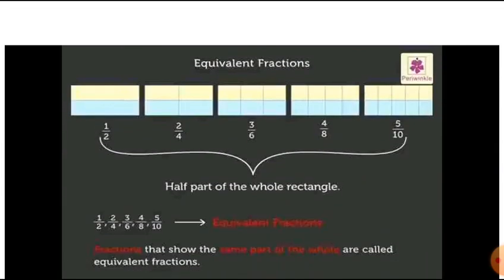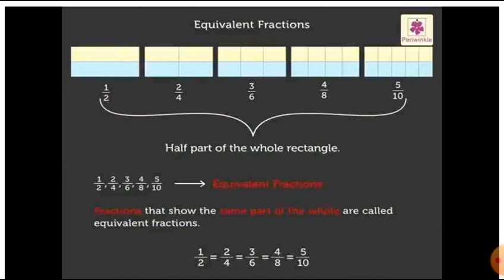Children, look at this given picture. Here you can see some rectangles. All the rectangles are having the same size. But the first rectangle is divided into two equal parts, and one part is shaded with blue colour, other part is shaded with yellow colour. So the fraction for the first rectangle is 1 by 2, or 1 upon 2.